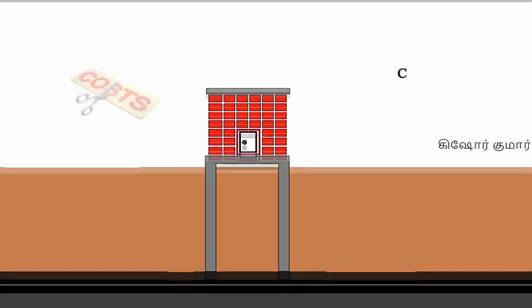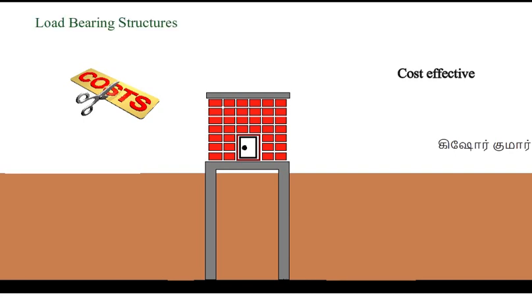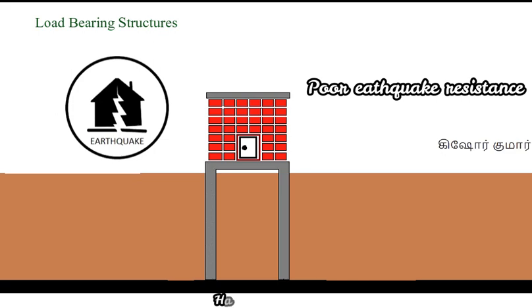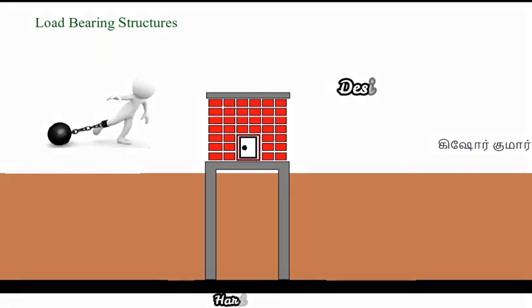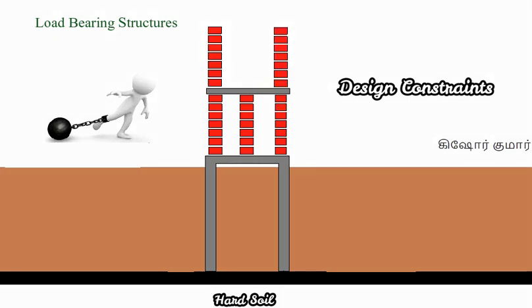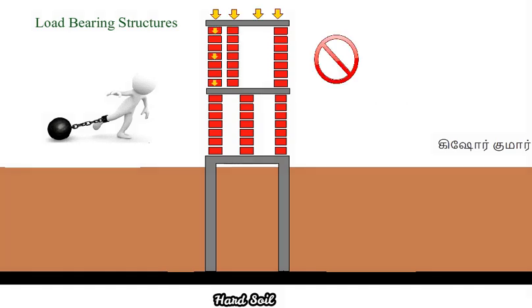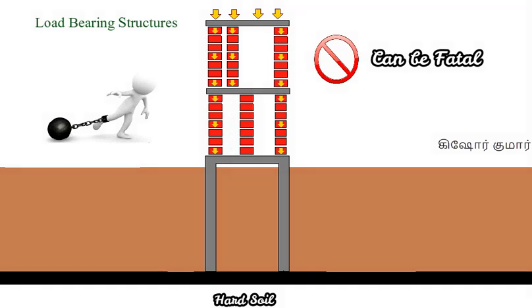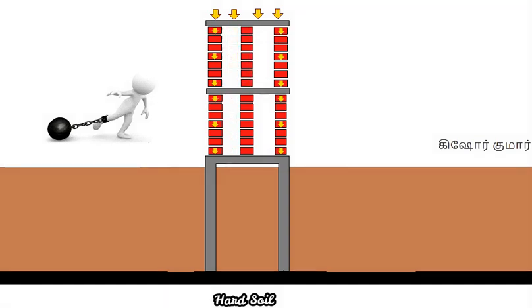Load-bearing structures are cost-effective compared to their counterpart, but they have poor earthquake resistance and many design constraints. The thickness of the wall is very important for the load to evenly distribute to the foundation and soil. If a first or second floor is to be constructed, there is no room for alterations in the wall structure, because a wall-over-wall arrangement is the only way to successfully transfer the mass to the foundation — any deviation can be fatal.